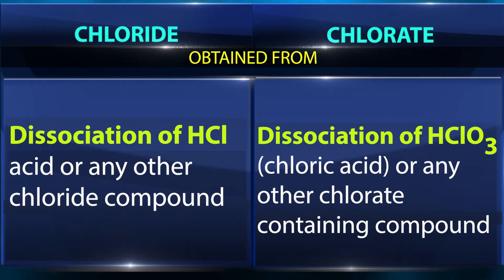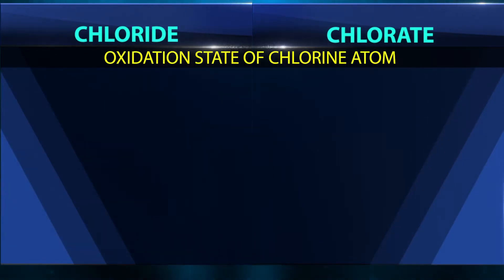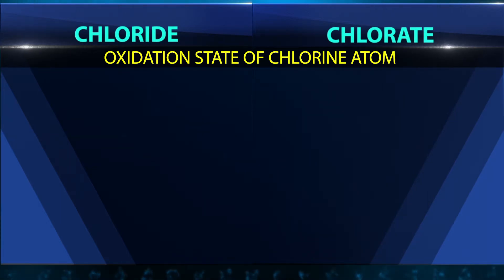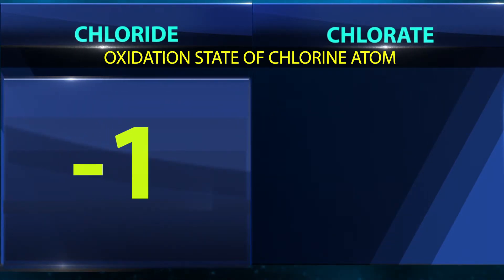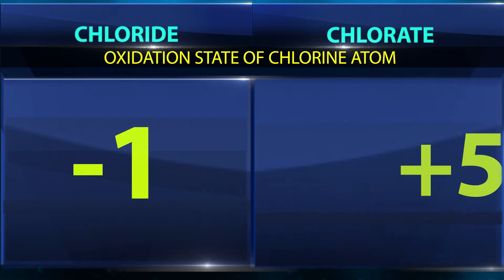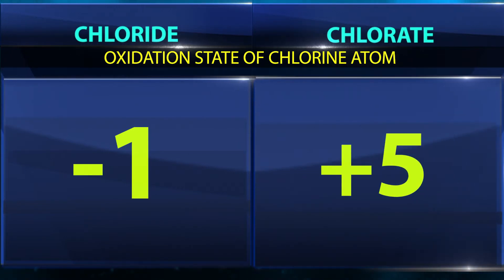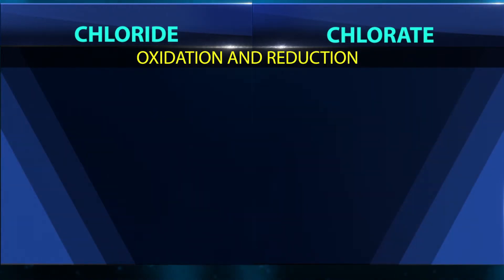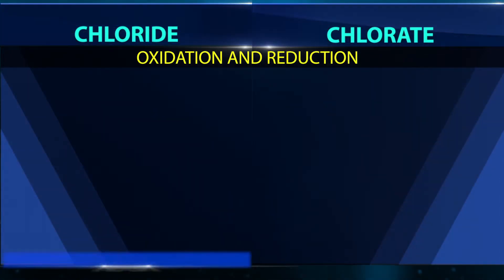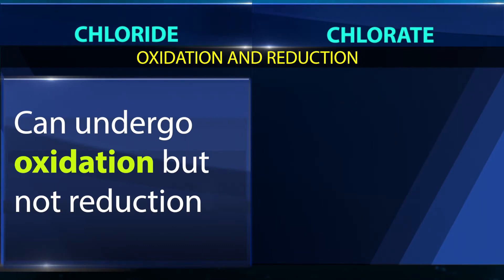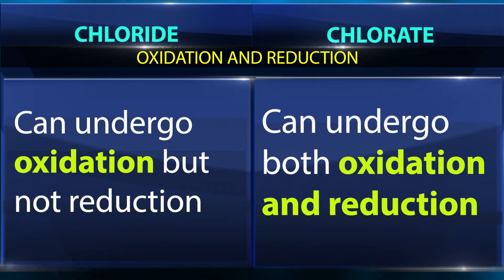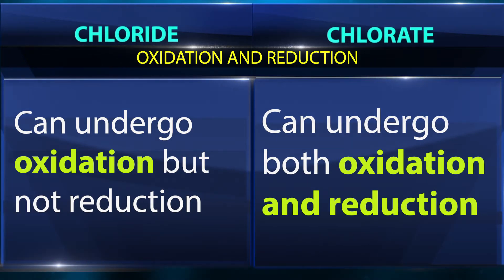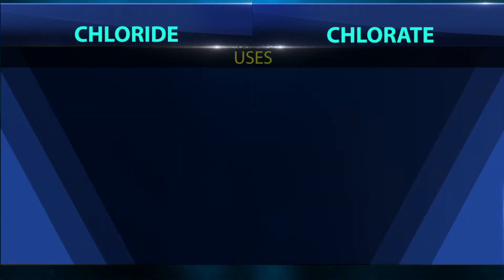The oxidation state of the chlorine atom in chloride is −1, while in chlorate it is +5. In terms of redox behavior, chloride can undergo oxidation but not reduction, whereas chlorate can undergo both oxidation and reduction.